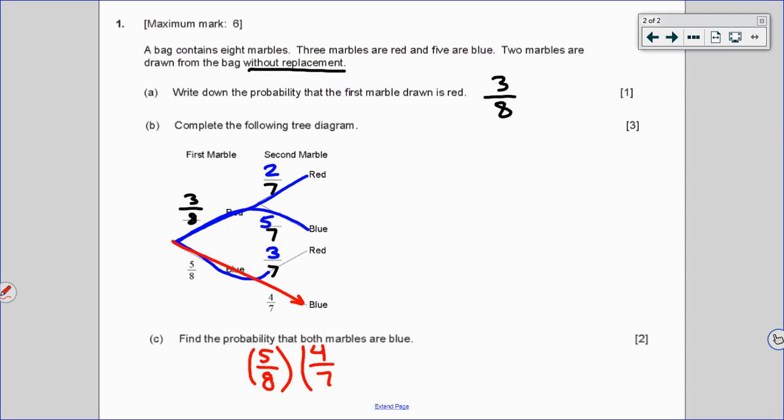5 eighths times 4 sevenths because you multiply to get to the end of a branch on a tree diagram. Numerator times numerator, 20. 8 times 7, 56. And you can either leave your answer like this unreduced because probability fractions can be left unsimplified, or you can divide both by 4 and this reduces to 5 over 14. And that's it for question 1.